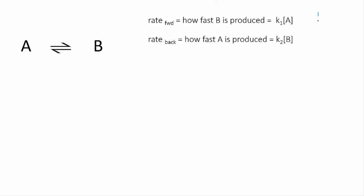Now, let's say we know the values of our rate constants. Let's say that K1 equals 6 and K2 equals 2. As long as we keep the temperature constant, those rate constants won't change.